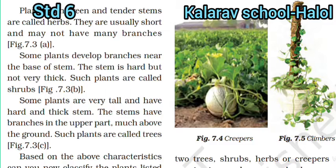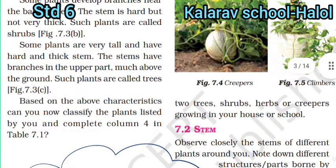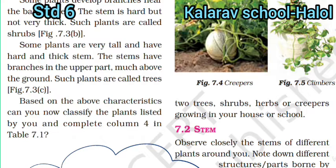Some plants are very tall and have hard and thick stems. The stems have branches in the upper part, much above the ground — such plants are called trees. Based on the above characteristics, can you now classify the plants? There are so many plants called herbs, shrubs, and creepers growing in your house and our school.